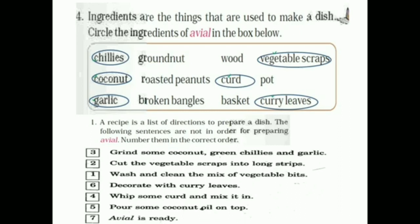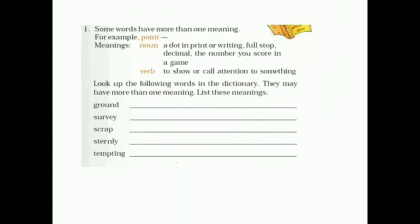First one, wash and clean the mix of vegetable bites. Second one, cut the vegetable scraps into long strips. And the third one, grind some coconut, chilies and garlic. Fourth one, wipe some curd and mix it. Fifth one, pour some coconut oil on the top. Sixth one, decorate with curry leaves. And the last one, seven, avial is ready.